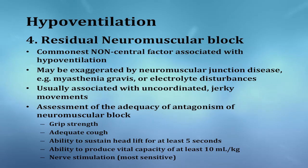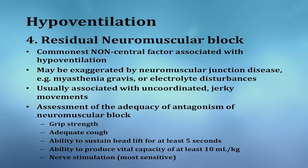It is important to assess the adequacy of antagonism of neuromuscular blockade. This can be assessed by grip strength, adequate cough, ability to sustain head lift for at least five seconds, ability to produce a vital capacity of at least 10 mL per kilogram, or by nerve stimulation, which is the most sensitive technique.